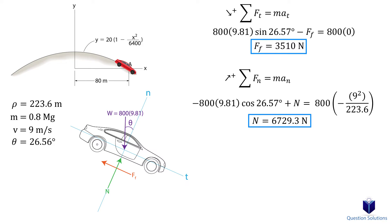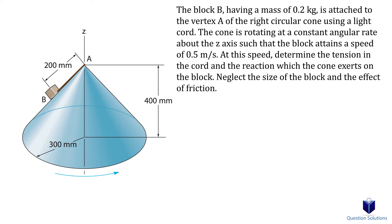Those are our answers. In this next question, we need to figure out the tension in the cord and the reaction the cone exerts on the block — in other words, the normal force. We can ignore friction and the size of the block. The block is hanging halfway through the cone, so the first step is to figure out the radius of the cone at the location where the block is, since we need that to find the normal acceleration.